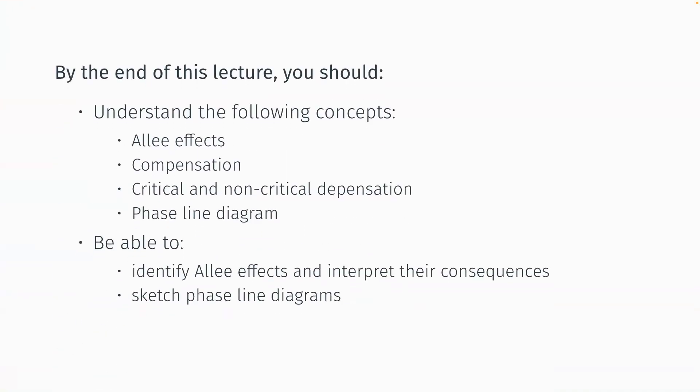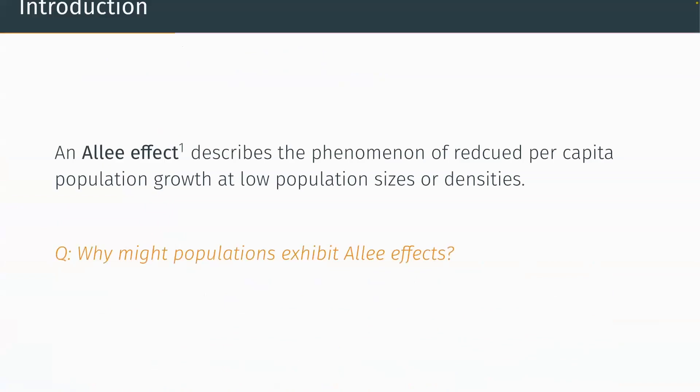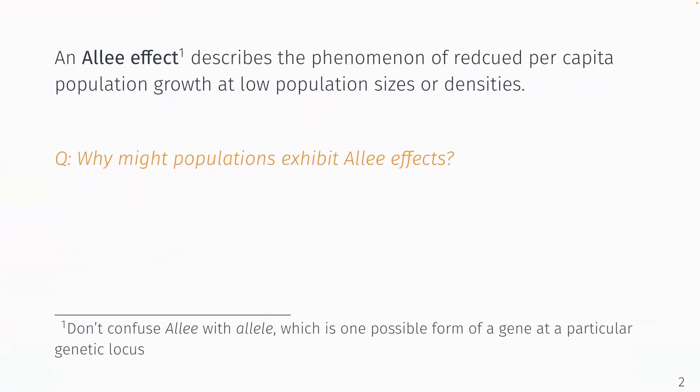So by the end of the day, you should understand what an Allee effect is, ideas about something called compensation, critical and non-critical depensation. These are just terms we use to describe something related to our net per capita growth rates, and how to draw phase line diagrams and what a phase line diagram is. So what is an Allee effect? Well, it essentially describes a biological phenomenon where when a population gets to a relatively low size or density, the per capita population growth reduces.